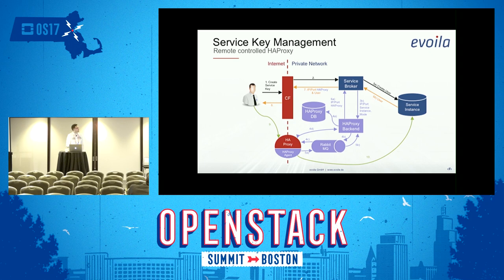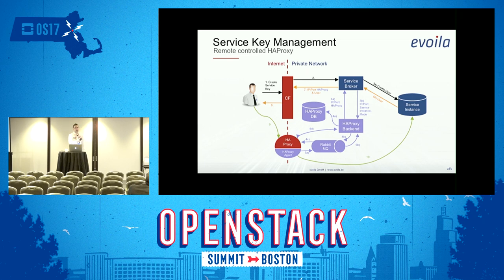The agent receives new configuration for the HA Proxy, produced by the HA Proxy backend we wrote, which is called by the service broker when a service key is requested. The service broker creates a user, looks up the IP address from the service instance, then sends that IP address to the HA Proxy backend saying 'I want public accessibility for that IP address.' The HA Proxy backend knows the current configuration and reconfigures it — adding port bindings — then notifies the HA Proxy agent of the new configuration.